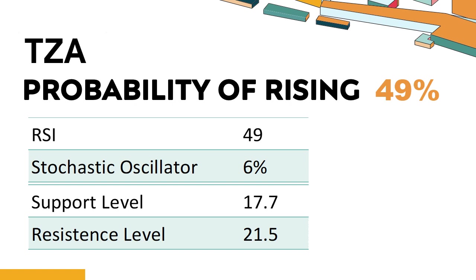The current stochastic oscillator of TZA is 6%. When the indicator falls below the 20 level, it is usually considered oversold, indicating that a price rebound or recovery is likely for the stock. An oversold condition occurs when the stock price falls too fast and too much in a short period of time, which may indicate that the selling pressure has exhausted.